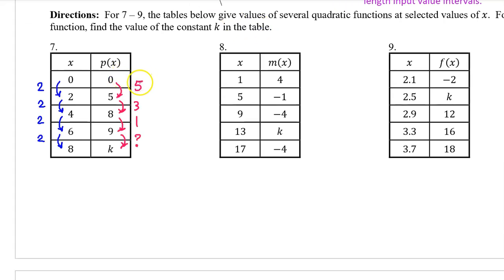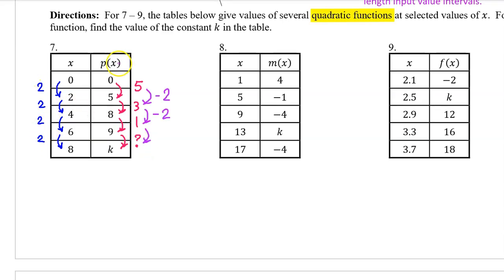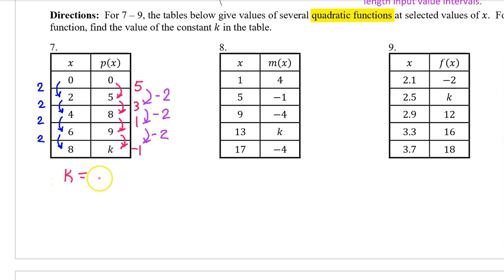For number 7, these are the changes in the output values and the changes in the input values. Since p of x is a quadratic function, the average rate of change should be changing at a constant rate. For the first two intervals, we see that the output value changes are decreasing by 2 each time. The same should hold for the third interval. If the last output value change was 1, the next should be negative 1. A change of negative 1 takes us from 9 to 8, so k equals 8.